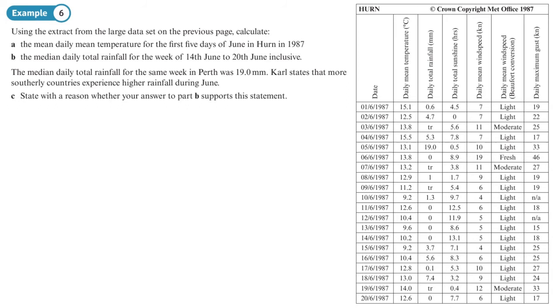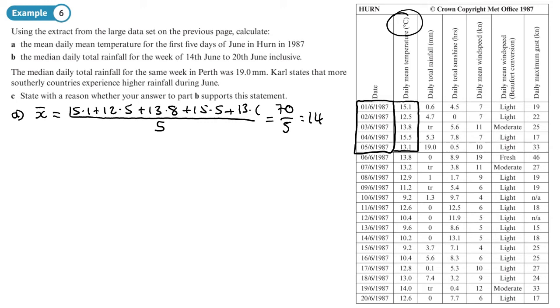Right, okay. Part A: We want the daily mean temperature for the first five days in June, which is these, for the daily mean temperature, which is here. If you want to find the mean of those, so since it's a sample, we should use this symbol to show it's a sample. 15.1, so I'll add those all together and we'll divide by five. And then when I add those up, I get 70. So that's 14, and the units are degrees Celsius.